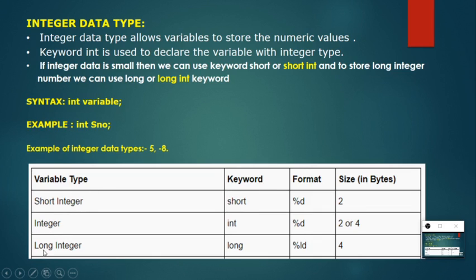Integer is again divided into three types: short int, int, and long int. Generally, integer contains 2 bytes, short integer contains 2 bytes, and long integer contains 4 bytes. All three have the common format specifier '%d'.